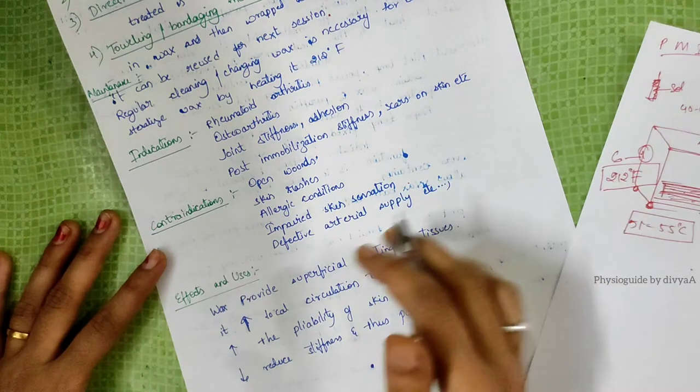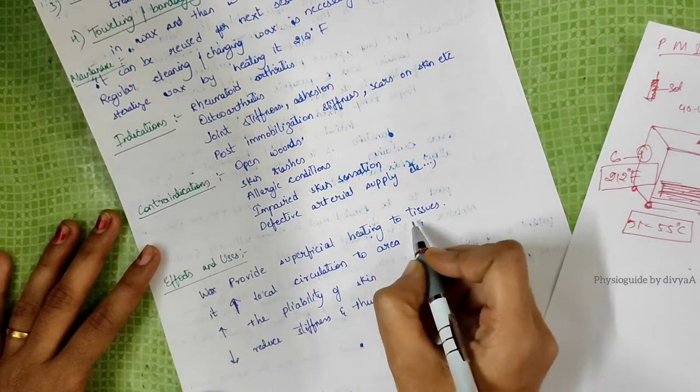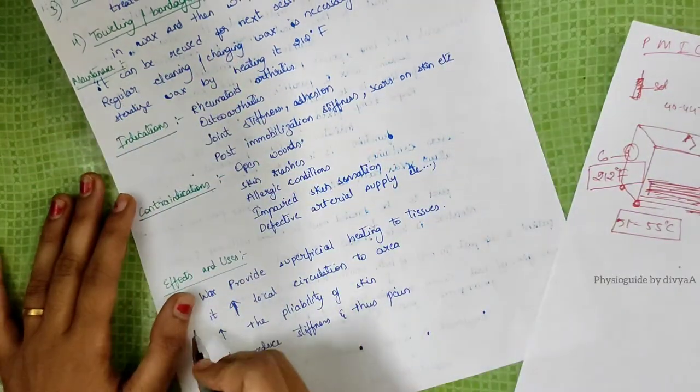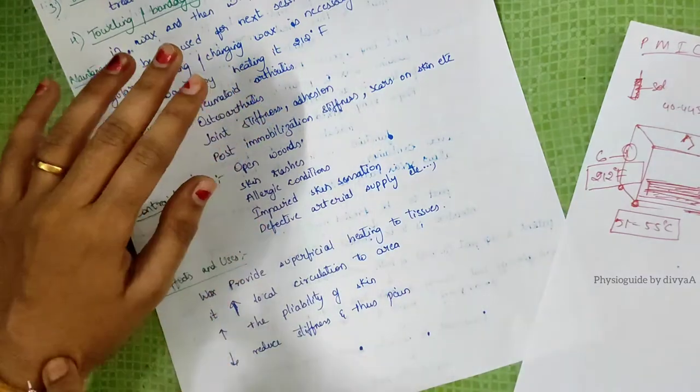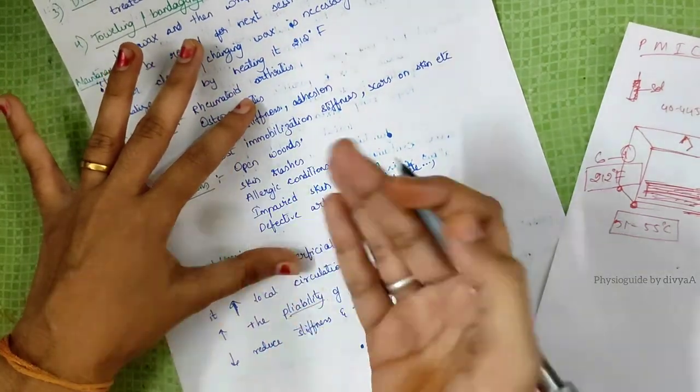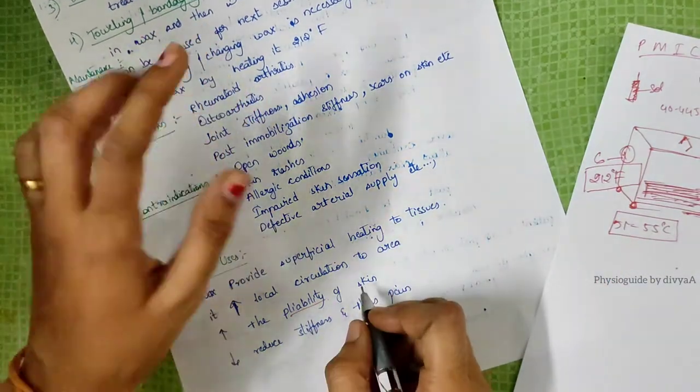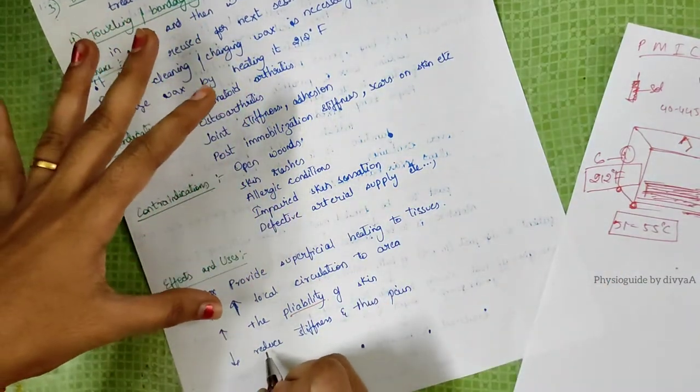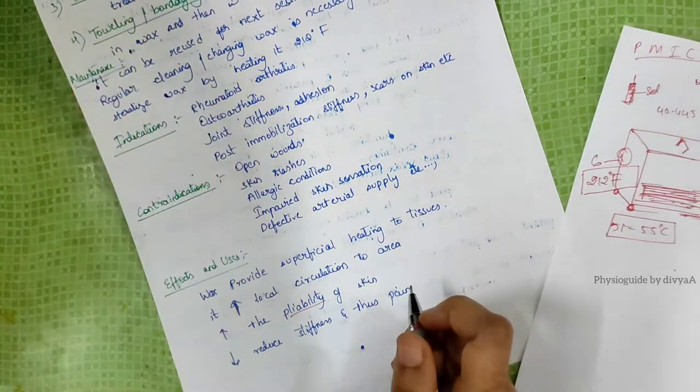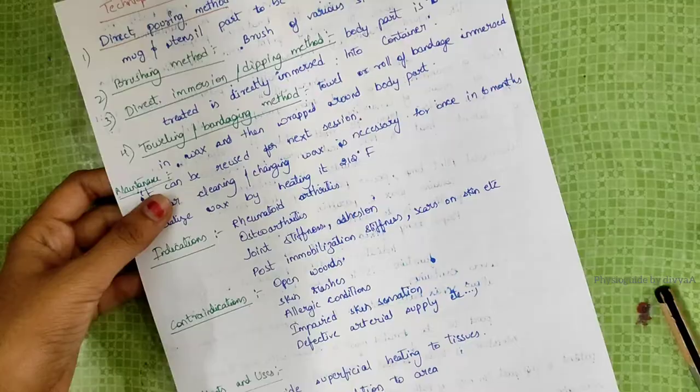Effects and uses: Wax provides superficial heating to tissues. It increases local circulation to that area and increases the pliability or flexibility of skin, meaning it increases the skin's ability to bend easily and reduces stiffness and pain.